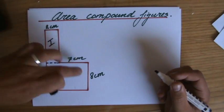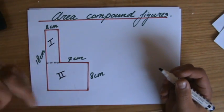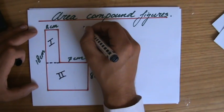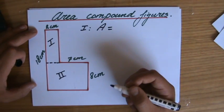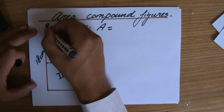So how many parts do I have now? I have one, two parts. Because by cutting it up, I have created two rectangles, and I know how to find the area of a rectangle.